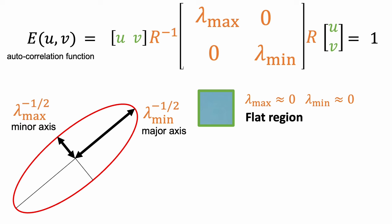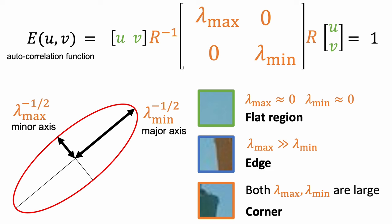So smooth regions have two small eigenvalues. Edges have one large eigenvalue and a small one, indicating that the displacements along the edge direction are not easy to localize. This means that we can find corners in an image by finding regions with large smallest eigenvalue of the second moment matrix.